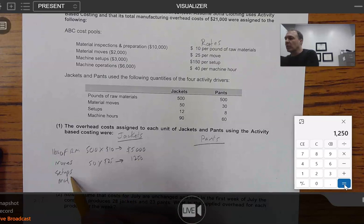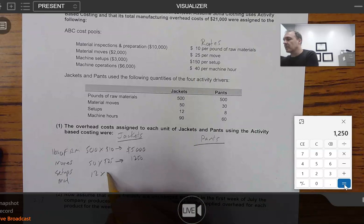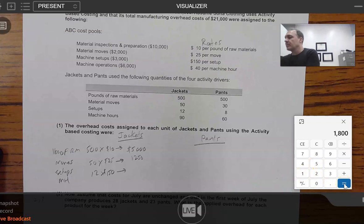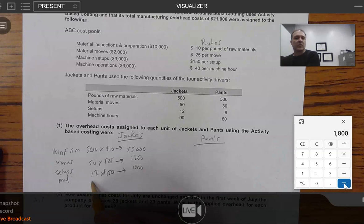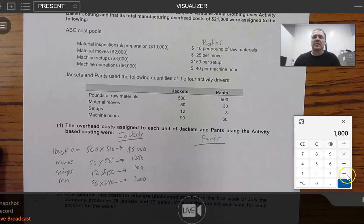Setups. We have 12 setups for jackets times our rate that they provided us of $150 per machine setup. So, let's take 12 setups times $150. That's $1,800.